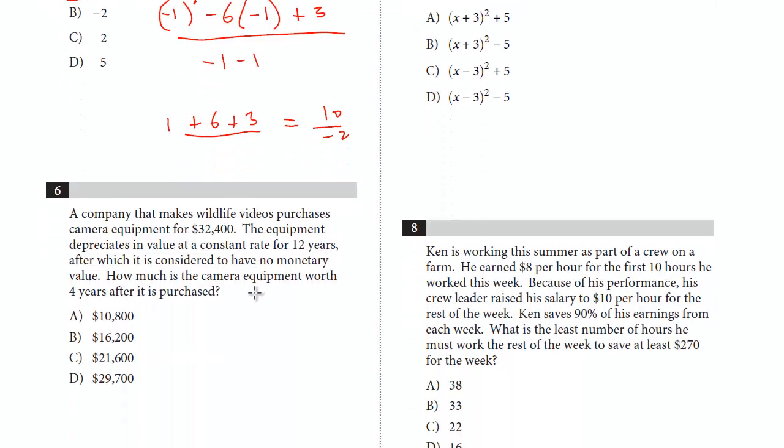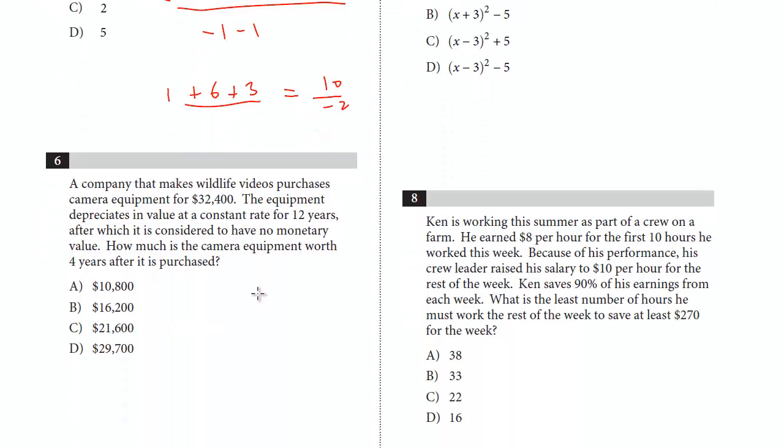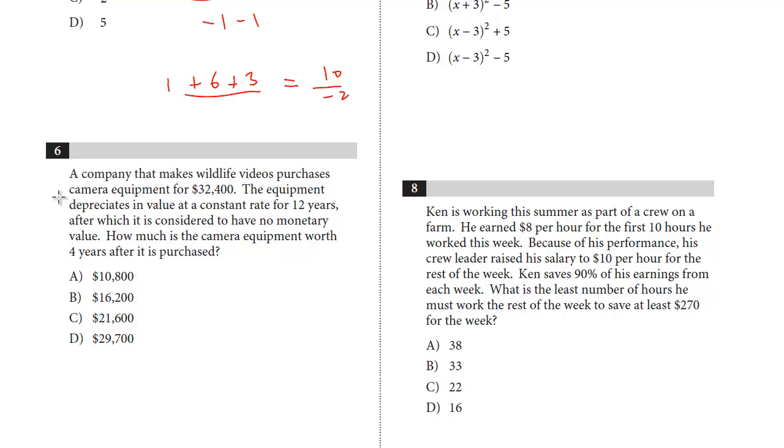Let's take a look at number 6. A company that makes wildlife videos purchases camera equipment for $32,400. The equipment depreciates in value at a constant rate for 12 years, after which it is considered of no monetary value. How much is the camera equipment worth 4 years after it's purchased? This is just linear straight line depreciation. This question I don't think is difficult, but it takes a little bit of arithmetic, and this is the no calculator section.